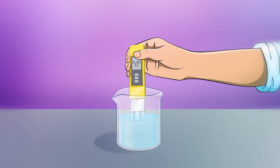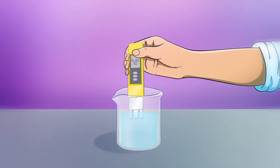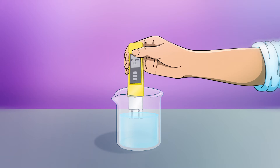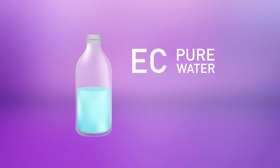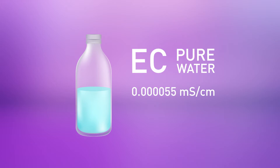Since the EC values are very low, you will always find siemens expressed as millisiemens or even as microsiemens. For example, the EC of pure water is 0.000055 when expressed in millisiemens per centimeter, but 0.055 if expressed in microsiemens per centimeter.